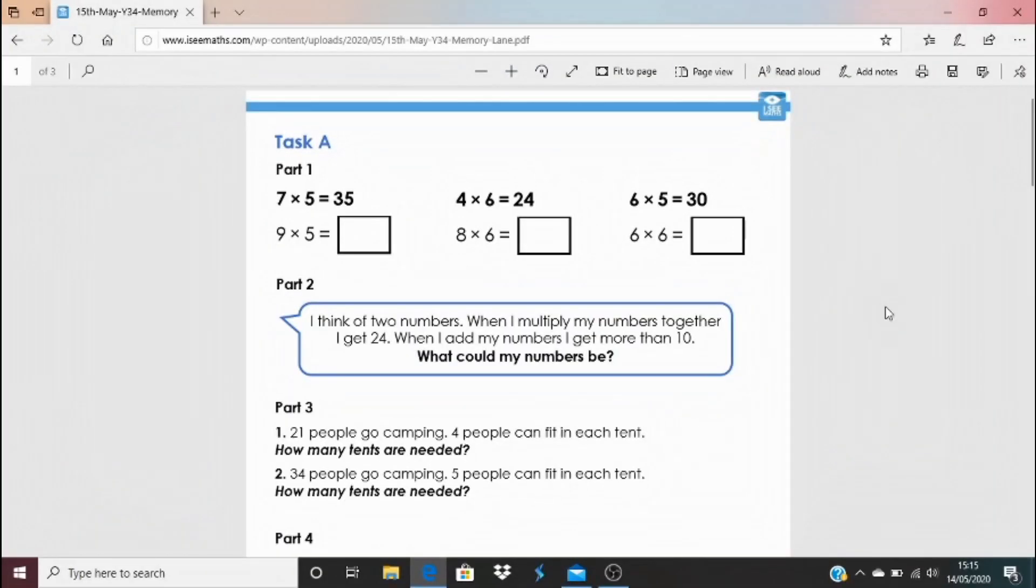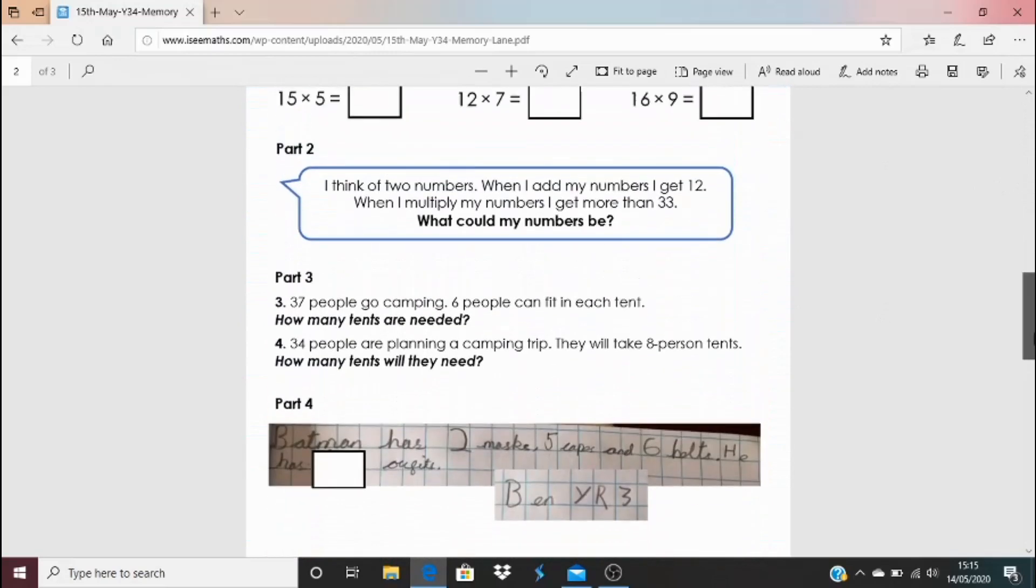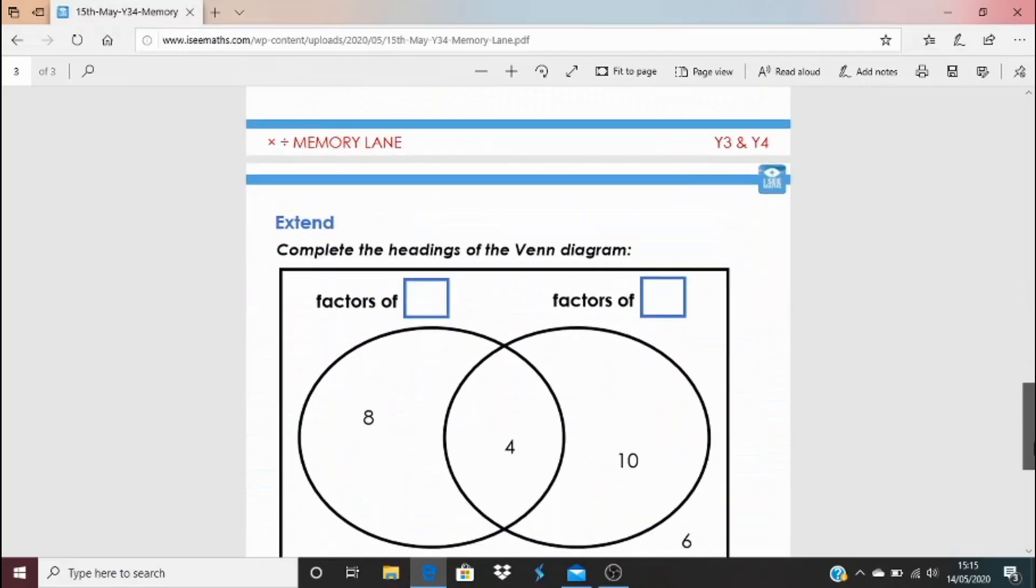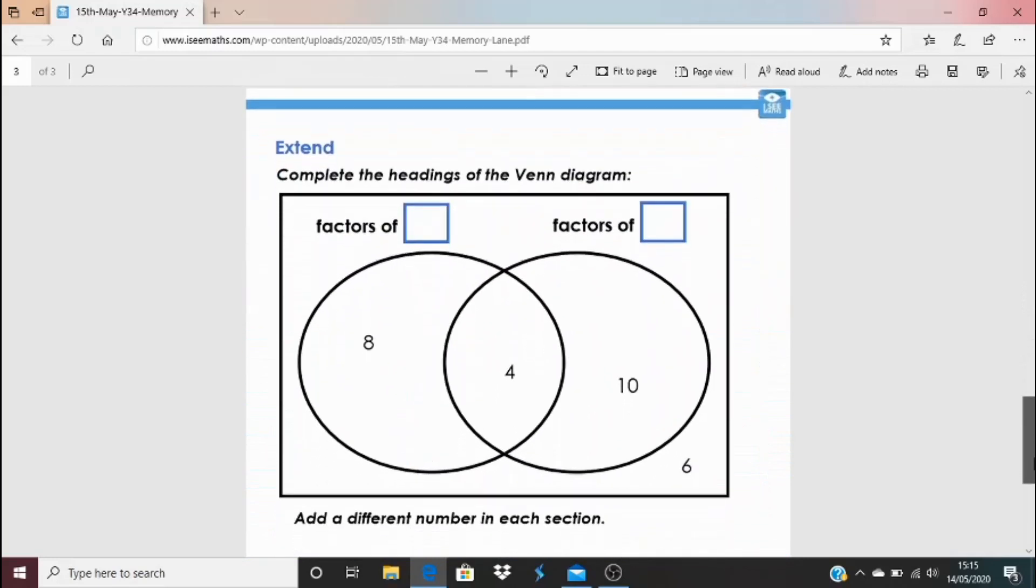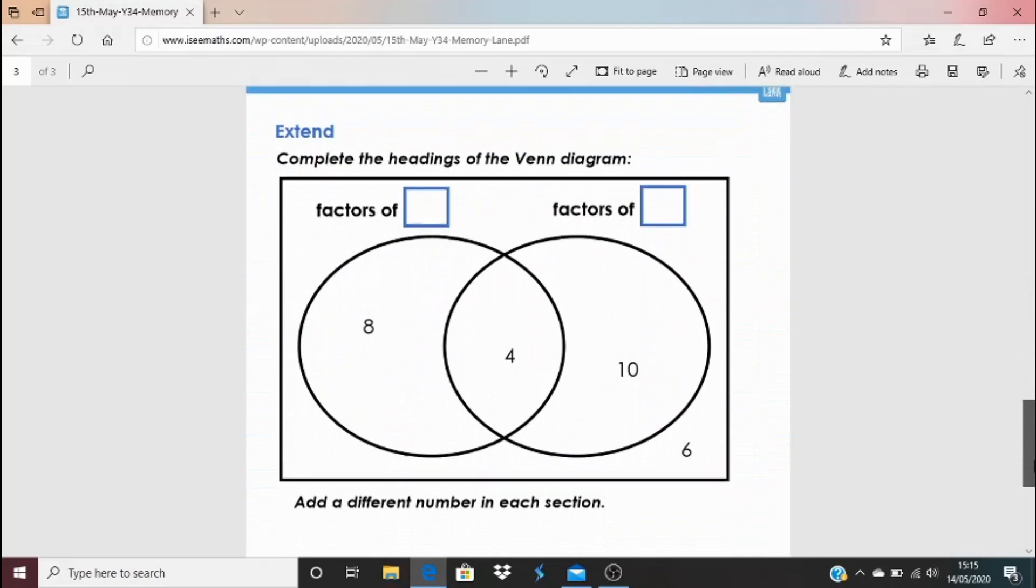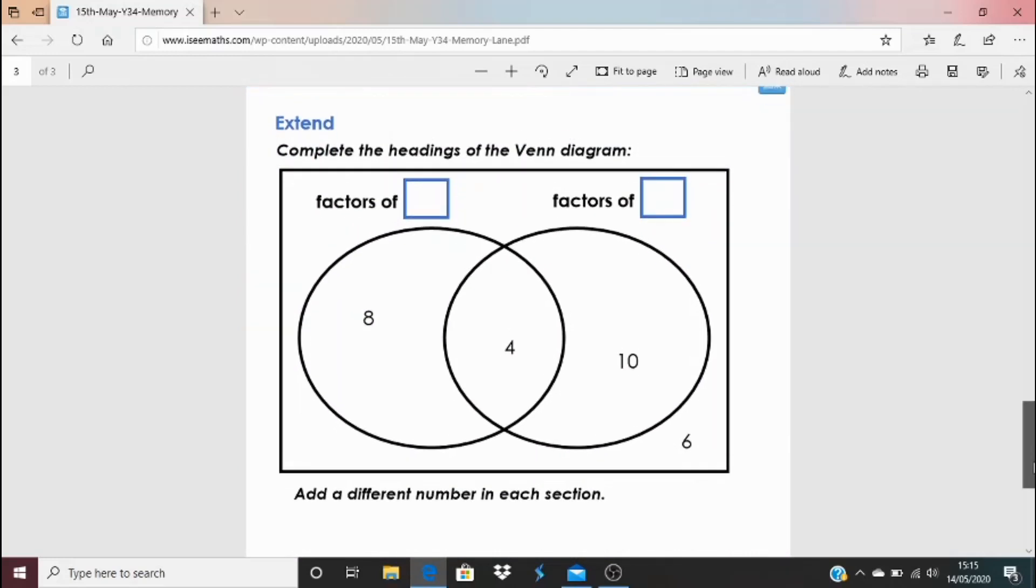For today's task we review all the different skills we've covered over the last three weeks. You can have a go at task A or task B. They're very similar to each other, just the calculations are slightly different. Then I've got an extend task which hopefully this time I've not made any mistakes. Please do tell me if I have, and see if you can finish the headings on those Venn diagrams.